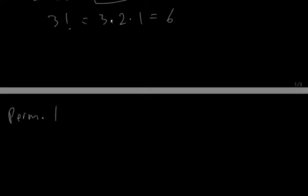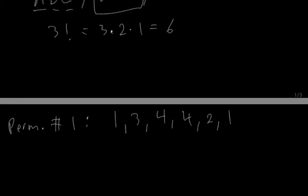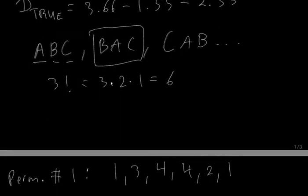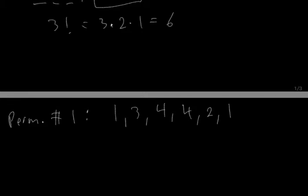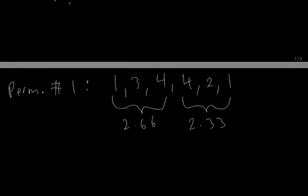For permutation number 1, let's say after permuting the data once we get: 1, 3, 4, 4, 2, 1. We take the mean of the first 3 numbers — since we had 3 fish in group 1 — so the mean of 1, 3, and 4 is 2.66. The mean of 4, 2, and 1 is 2.33. The difference for permutation 1, d(p1), equals 2.66 minus 2.33, which is 0.33.